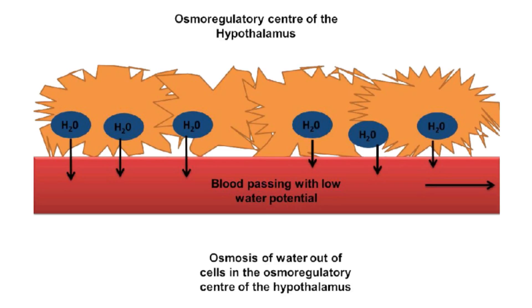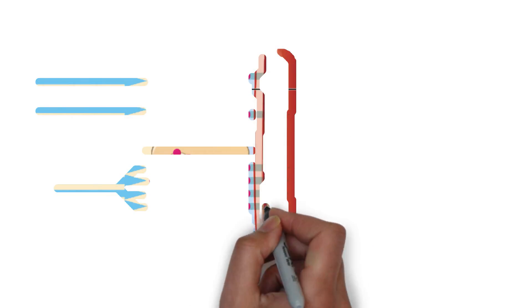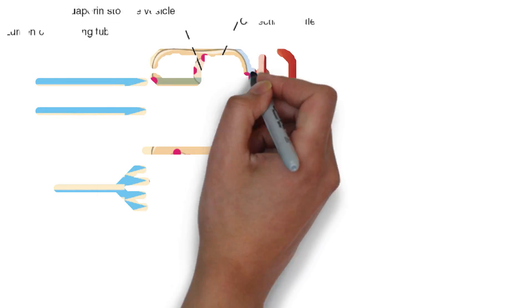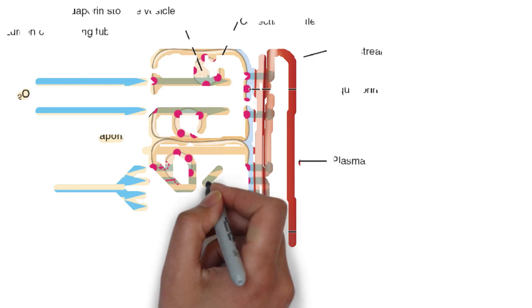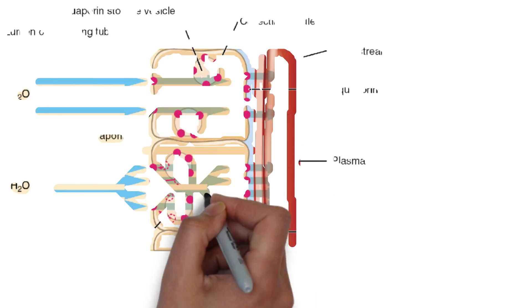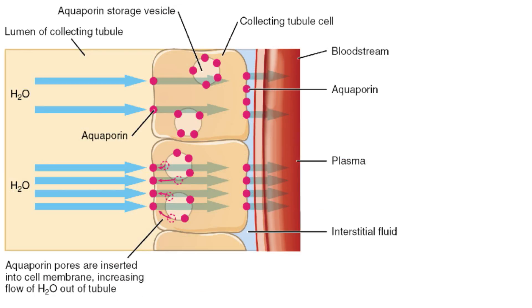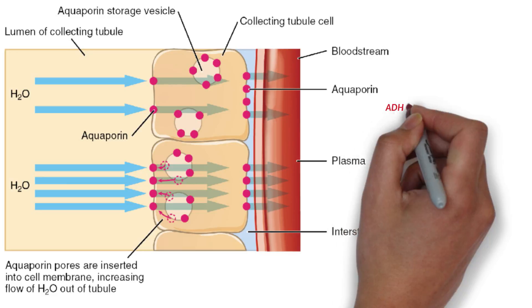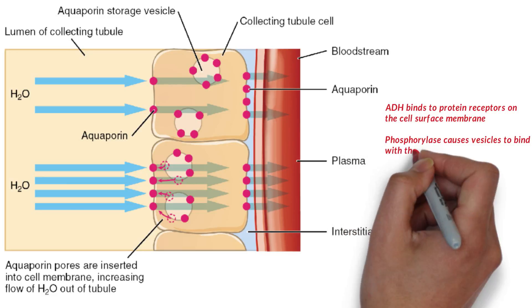ADH is secreted into the bloodstream by the pituitary, and will travel to the kidneys in the blood. The target cells of ADH are the cells of the collecting duct. ADH binds to protein receptors on the cell surface membrane of the cells of the collecting duct.